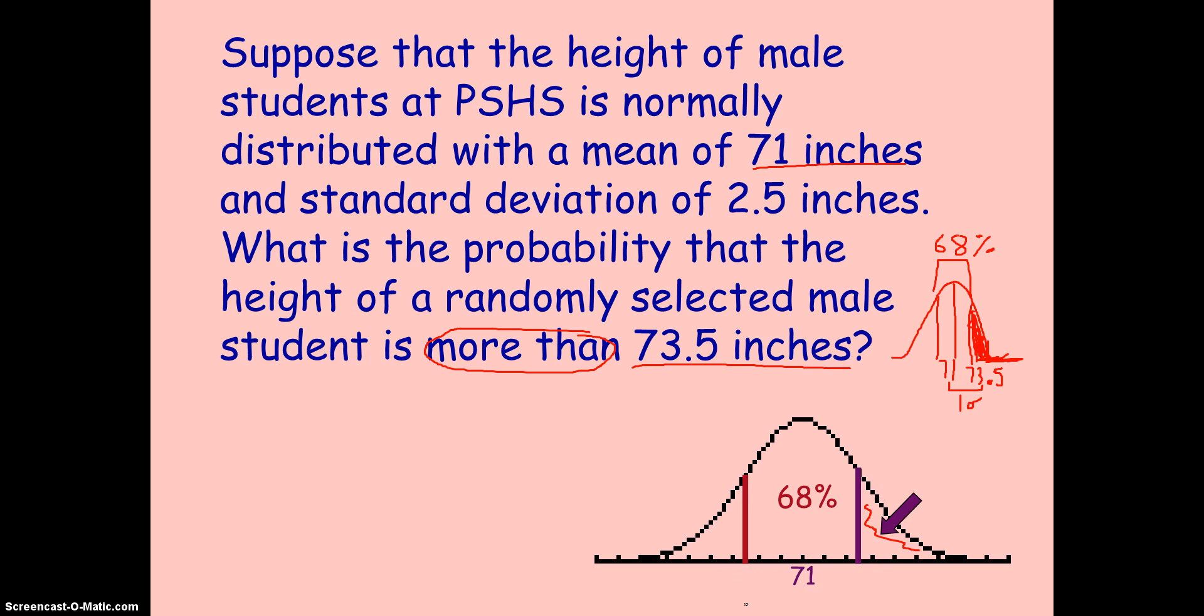But the bell curve is symmetrical, so that helps us out. If we have the mean of 71, we only need this area over here. We know that 68% of the data falls within one standard deviation of the mean, and because these areas are going to be the same size, their total is going to be 0.32, and we only need half of that. We can just divide by 2 and get the total. And that the probability of a student's height at Potato Senior High School being greater than 73.5 is only going to be 16%, 0.16. Simple enough. Well, let's move on.